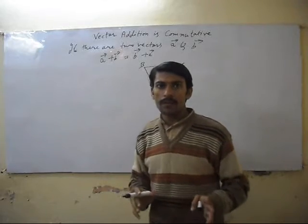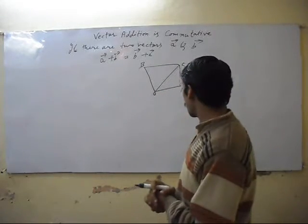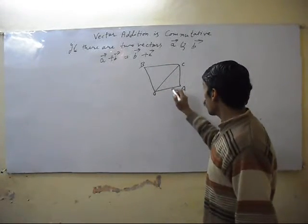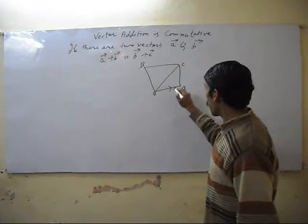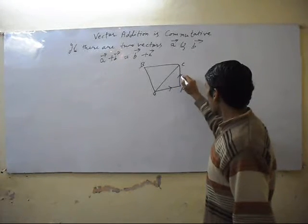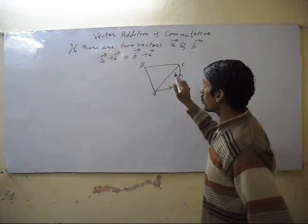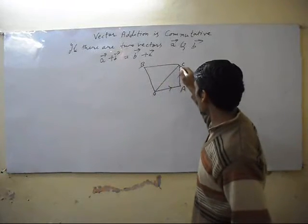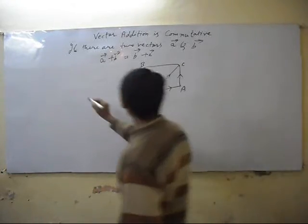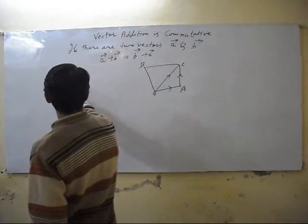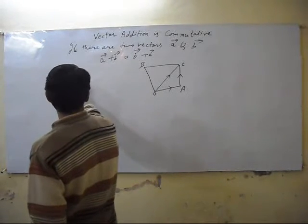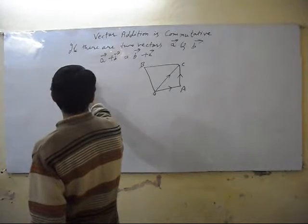We have learned that addition of a vector in triangle form: OA plus AC